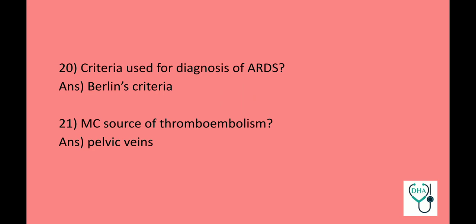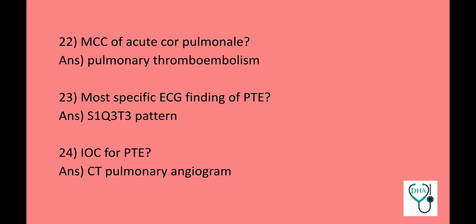Most common source of thromboembolism: pelvic veins. Most common cause of acute cor pulmonale: pulmonary thromboembolism. Most specific ECG finding of pulmonary thromboembolism: S1Q3T3 pattern — this is a very famous repeated question in NEET PG. Investigation of choice for pulmonary thromboembolism: CT pulmonary angiogram.